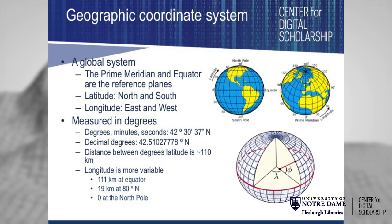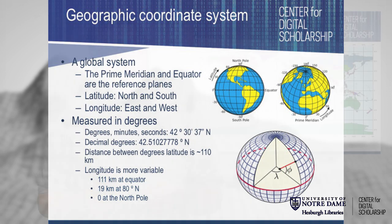One important thing to remember with geographic coordinate systems is that a degree is an angular measurement, not a linear measurement. While a degree might be one length at the equator — particularly with longitude — it might be quite different when we get up to the pole, because the circle itself gets smaller as you move away from the reference planes. It's always important to remember that these are angular measurements, not linear measurements.